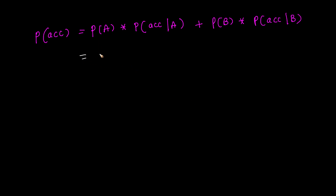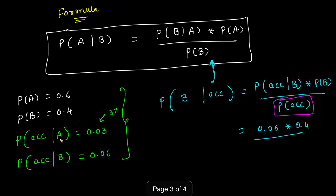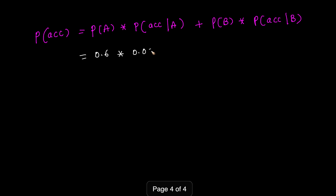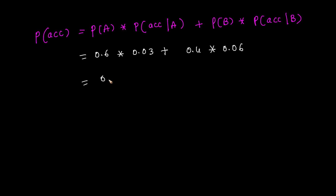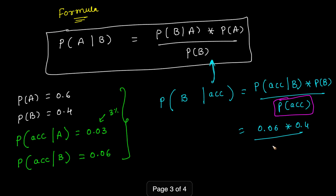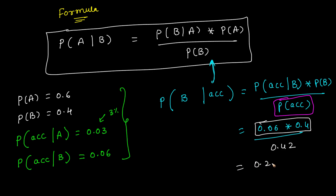Computing: 0.6 × 0.03 = 0.018 and 0.4 × 0.06 = 0.024, so P(accident) = 0.018 + 0.024 = 0.042. Substituting into Bayes' formula: P(B | accident) = 0.06 × 0.4 / 0.042 = 0.024 / 0.042 = 0.57. Both approaches give the same result of 0.57.